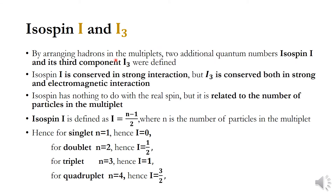By arranging hadrons in multiplets, two additional quantum numbers — isospin I and its third component I3 — were defined. Isospin I is conserved in strong interactions, but I3 is conserved in both strong and electromagnetic interactions. Isospin has nothing to do with real spin, but it is related to the number of members in the multiplet. Isospin I is defined as I = (n − 1)/2, where n is the number of particles in the multiplet.